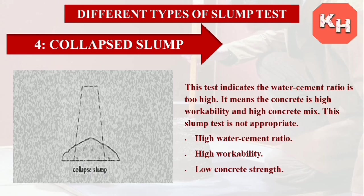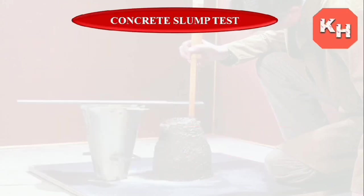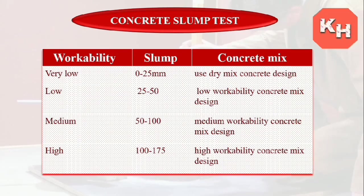Collapsed slump: This test indicates that the water-cement ratio is too high, meaning water content is too high. The concrete has high water quality and high workability. This result is not appropriate and the concrete may be rejected, or the test is taken again — if it collapses again, the concrete is rejected. Collapsed slump means high water-cement ratio, high workability, and low concrete strength.